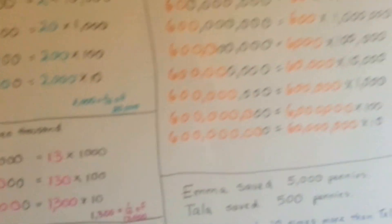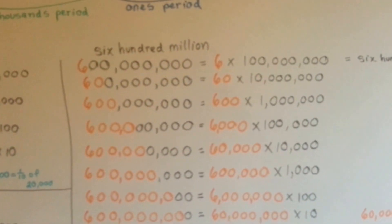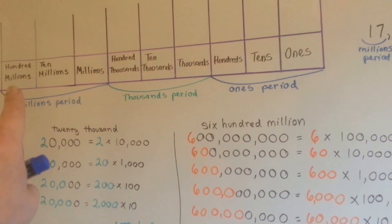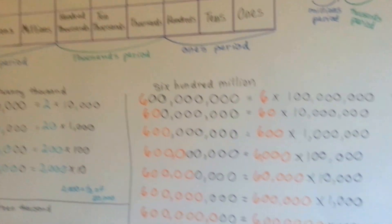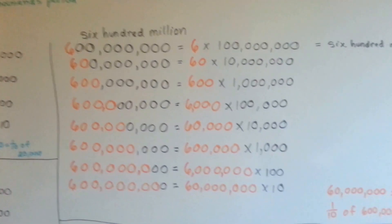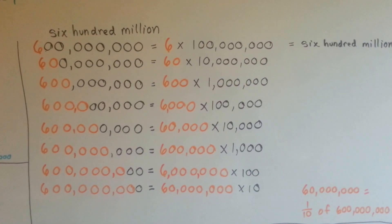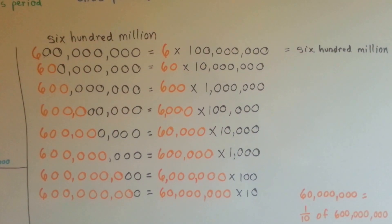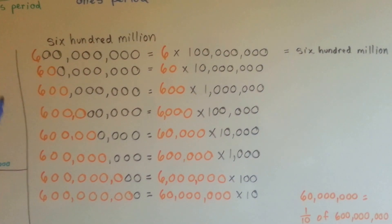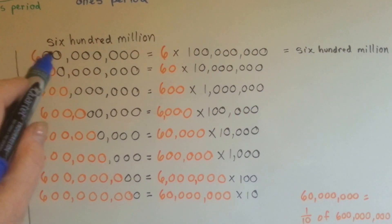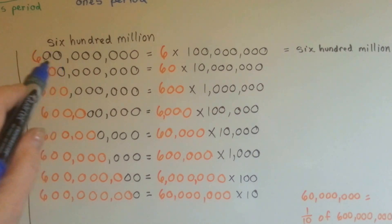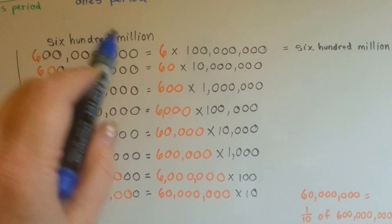Now we're going to get really big — our place value for fifth grade goes up to hundred millions. This is six hundred million! Here's our millions period, and we've got six hundred here.